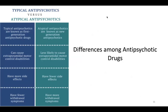Differences among antipsychotic drugs. All effective antipsychotic drugs block D2 receptors. The degree of this blockade in relation to other receptor actions varies considerably among drugs. The newer aripiprazole appears to be a partial agonist of D2 receptors. Varying degrees of antagonism of alpha-2-adrenergic receptors are also seen with risperidone, olanzapine, clozapine, aripiprazole, and quetiapine.